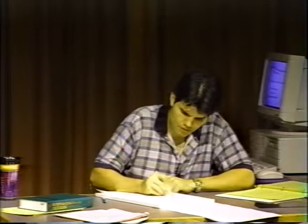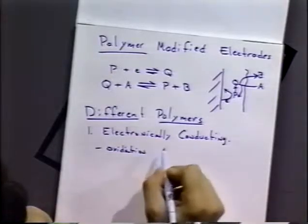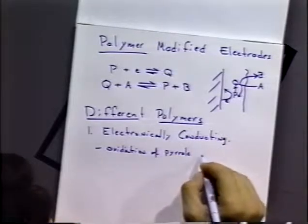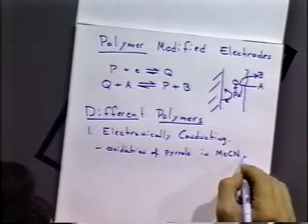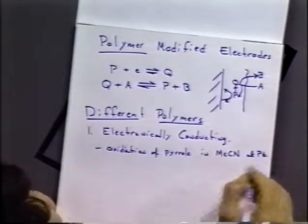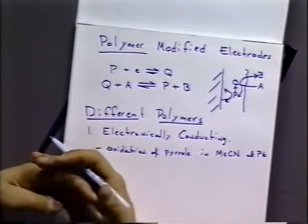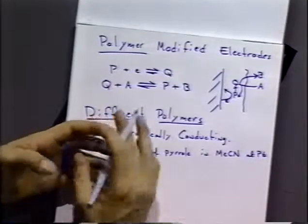One example is the oxidation of pyrrole. This usually has to occur in acetonitrile, and you can do it at various electrodes — for example, platinum. Once you oxidize it, basically you put pyrrole as a monomer in the solution. You oxidize that material on the electrode surface. During the process of oxidation, you make a conducting film, and so the oxidation can continue on the surface of the polymer film itself. You can get the thickness of the film by counting the amount of charge you've passed, and you can tell how much material you've actually oxidized.